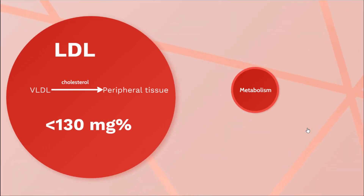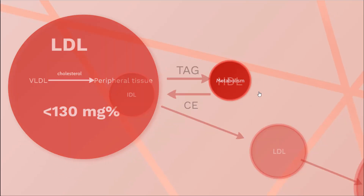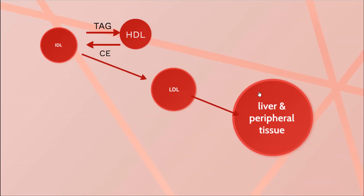LDL is produced from VLDL in the circulation and its function is to transport cholesterol to the peripheral tissue. The first step in LDL metabolism is the transformation of IDL into LDL.